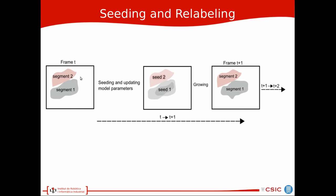So we have an initial labeling segment one and segment two at frame T. And after seeding and updating the model parameters we determine these two seeds for the two segments. And these points are now unlabeled and during the region growing procedure we determine which segment gives the minimum distance for the non seed points. And this is how we determine the new labels.